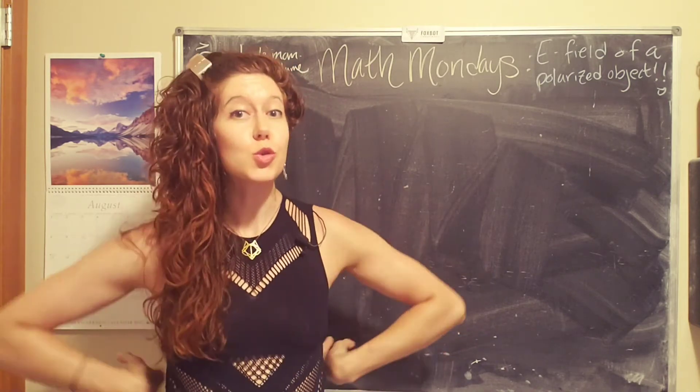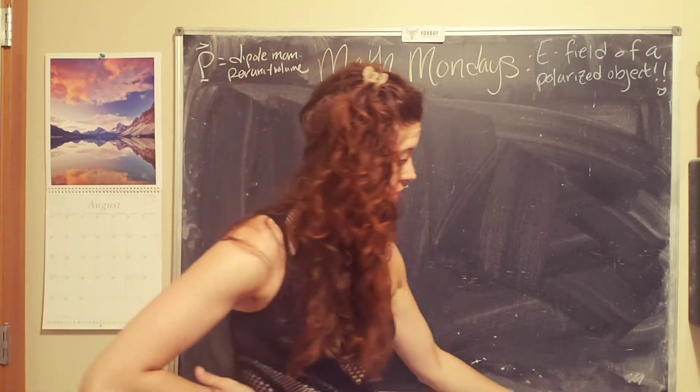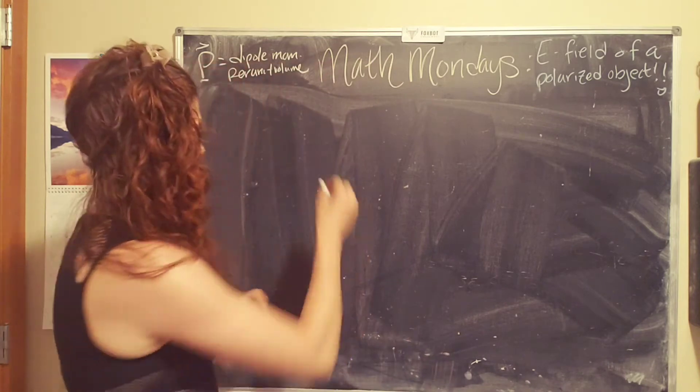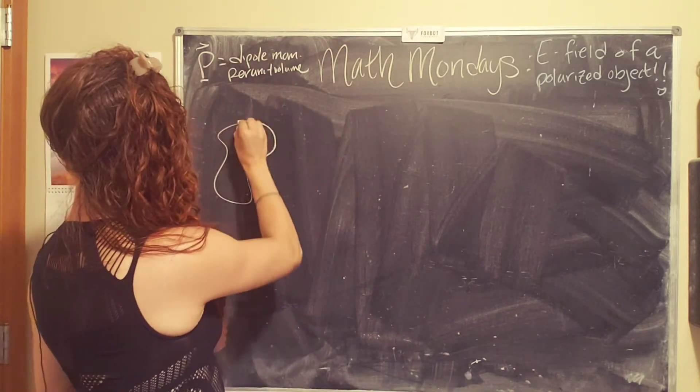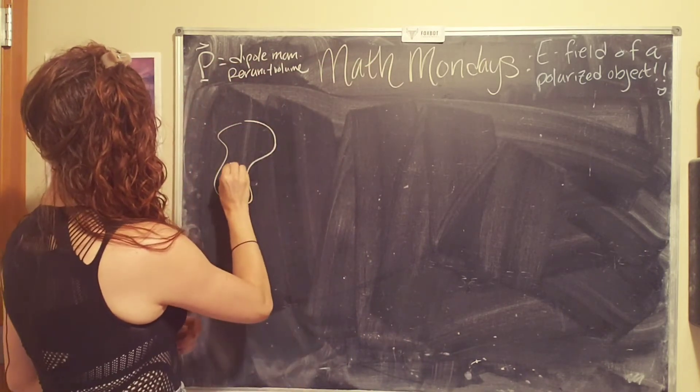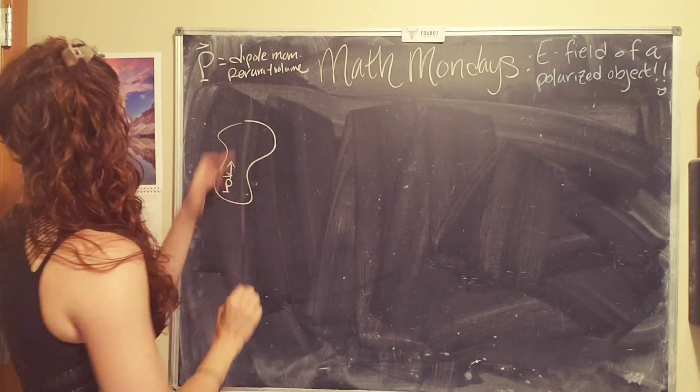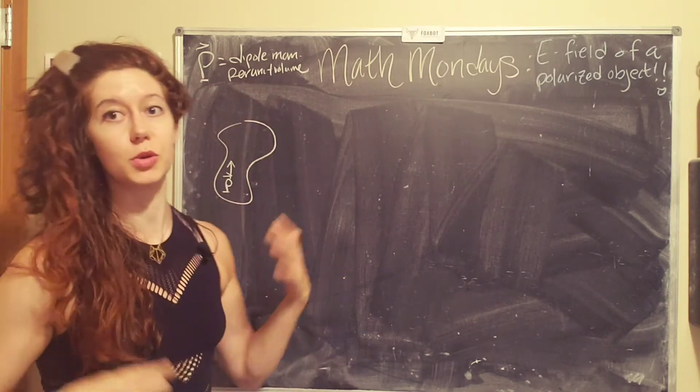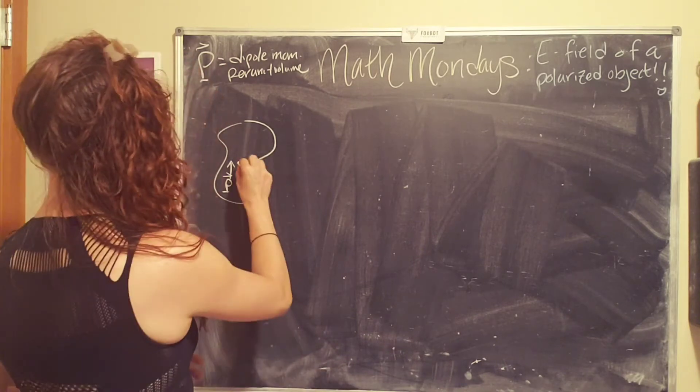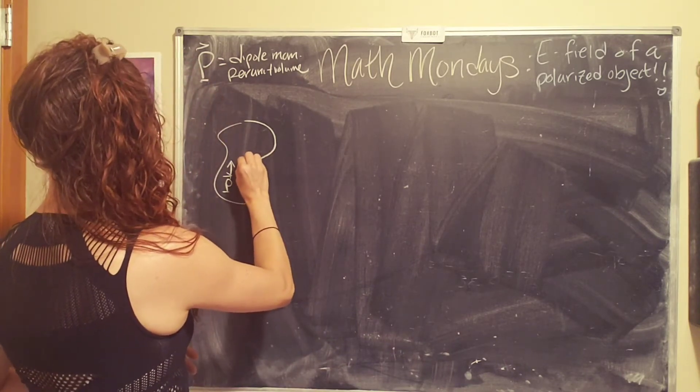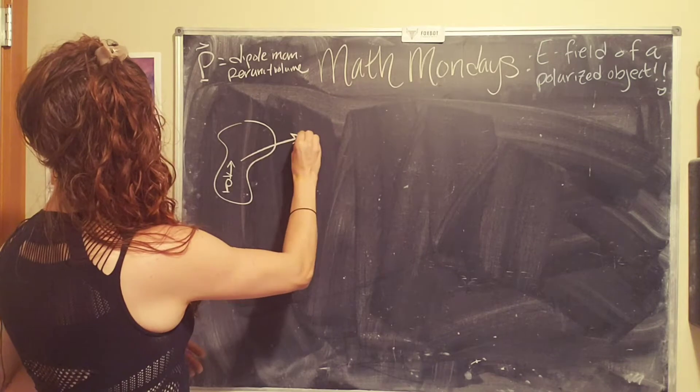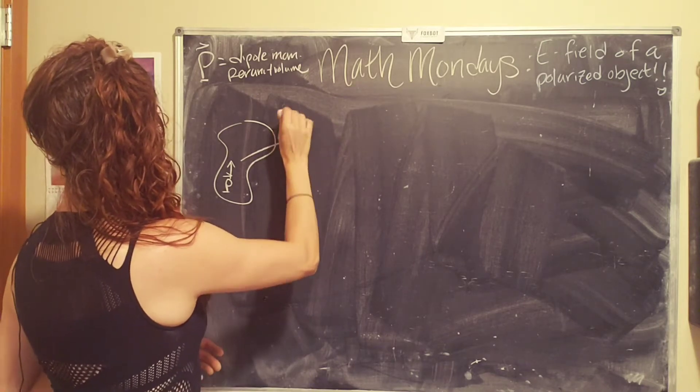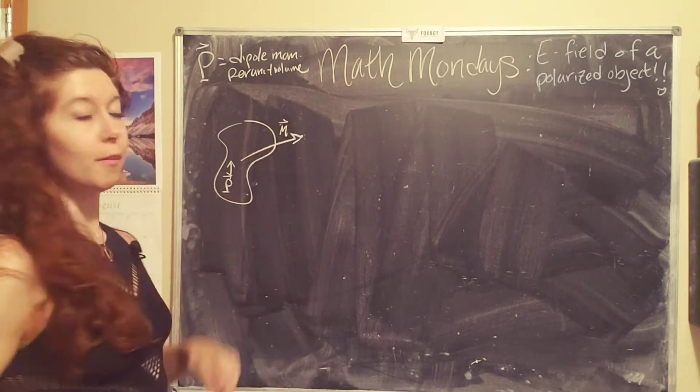Okay, so let's start with a randomly shaped object, and say that this object has a polarization p, which is also the dipole moment per unit volume, and we want to ask, what is the field at a distance script r from the object?